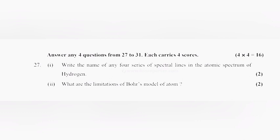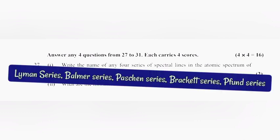Question 27, part 1: Write the name of any four series of spectral lines in the atomic spectrum of hydrogen. Answer: Lyman series, Balmer series, Paschen series, Brackett series, Pfund series. Write any four.